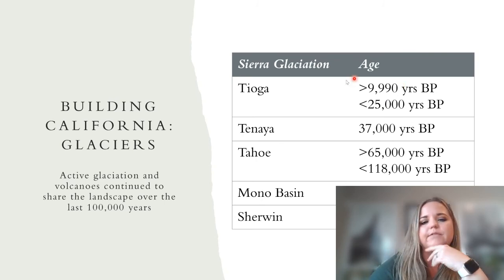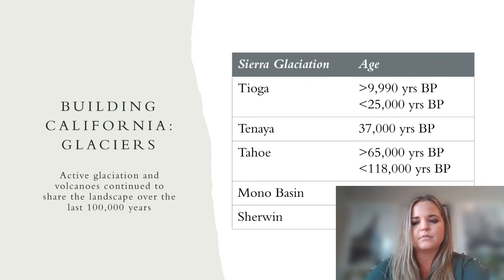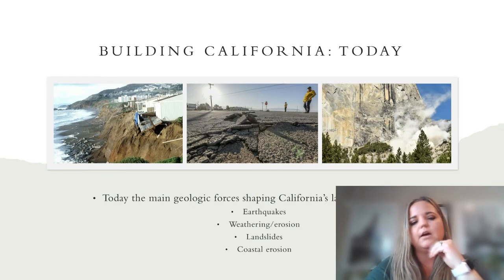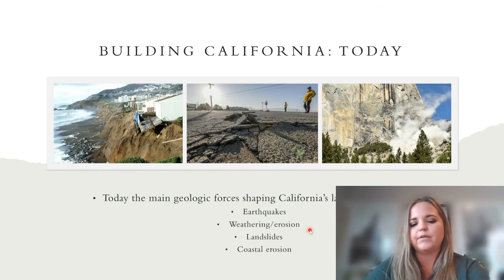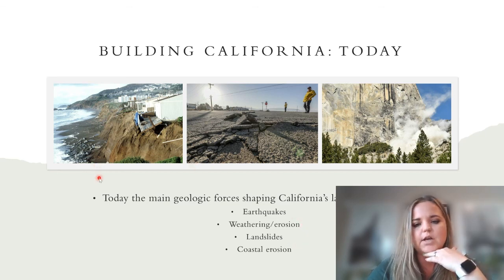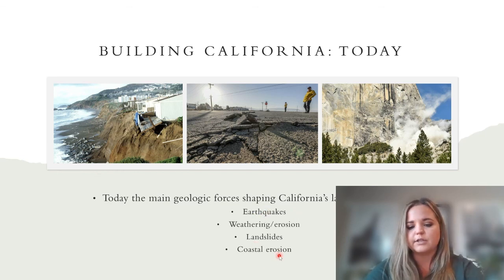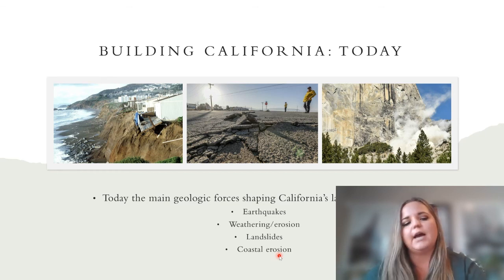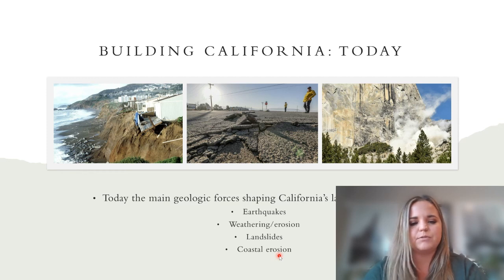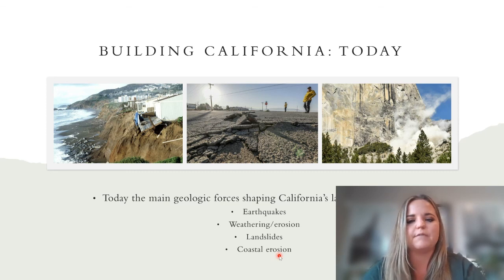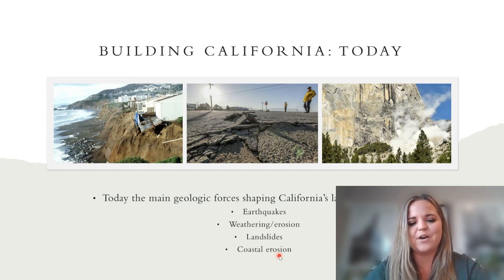These are some of the Sierran glaciations and their associated ages. Today, most of what is building California are earthquakes, weathering and erosion, landslides, and coastal erosion — these are the major geologic factors shaping California's geomorphology. We'll get a little more into tectonics and do some review of rocks and earth materials before moving into the different provinces. I hope you learned something from this lecture, and I'll see you in the next video.